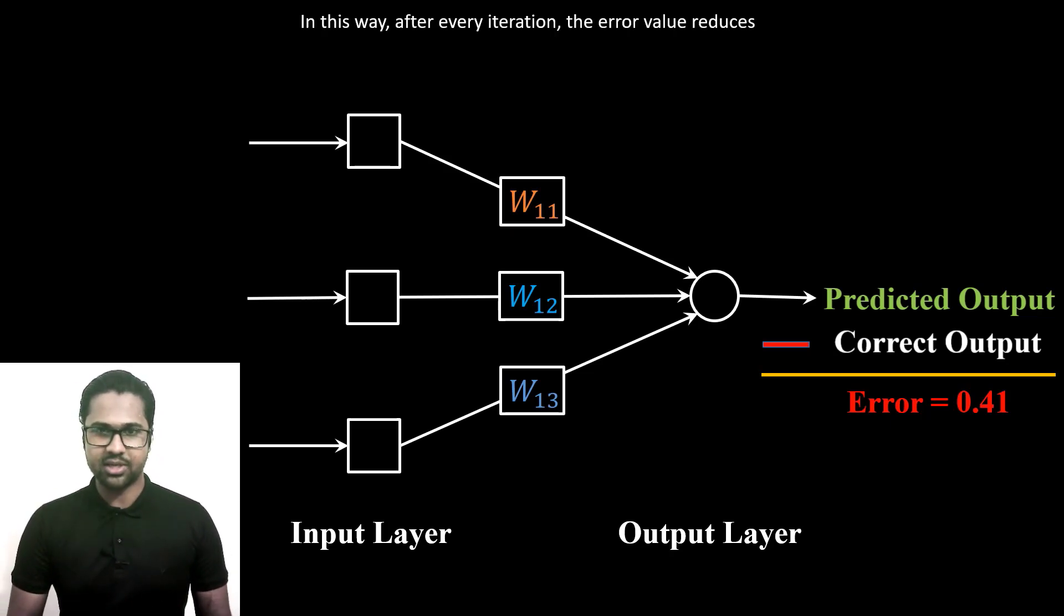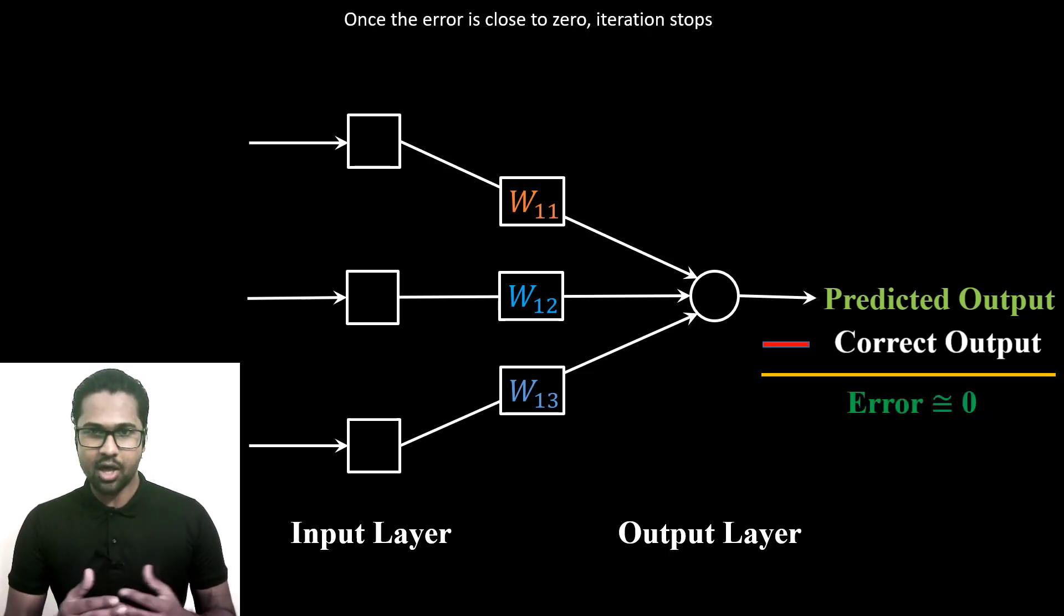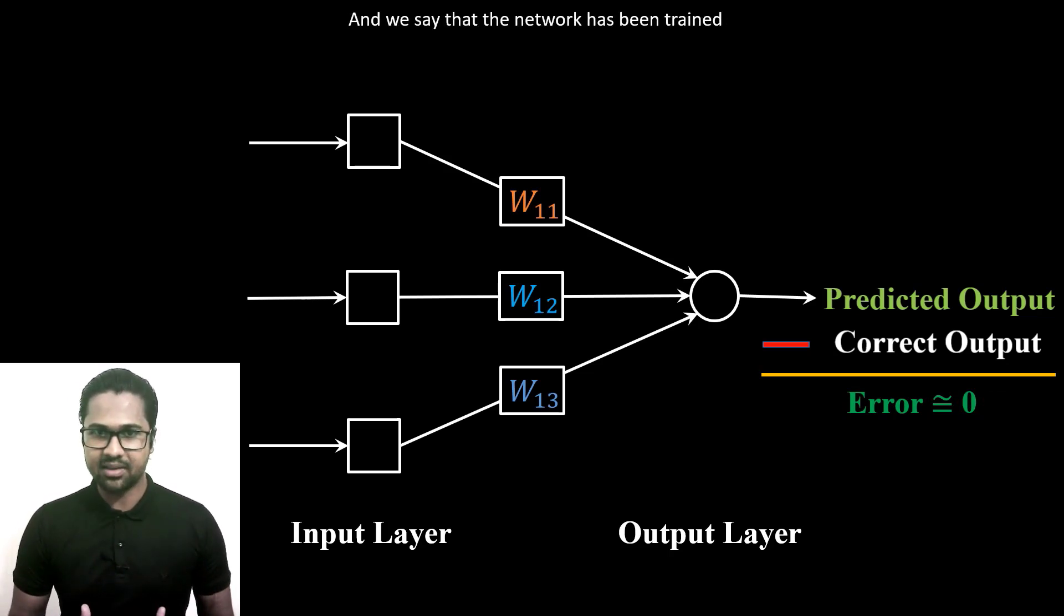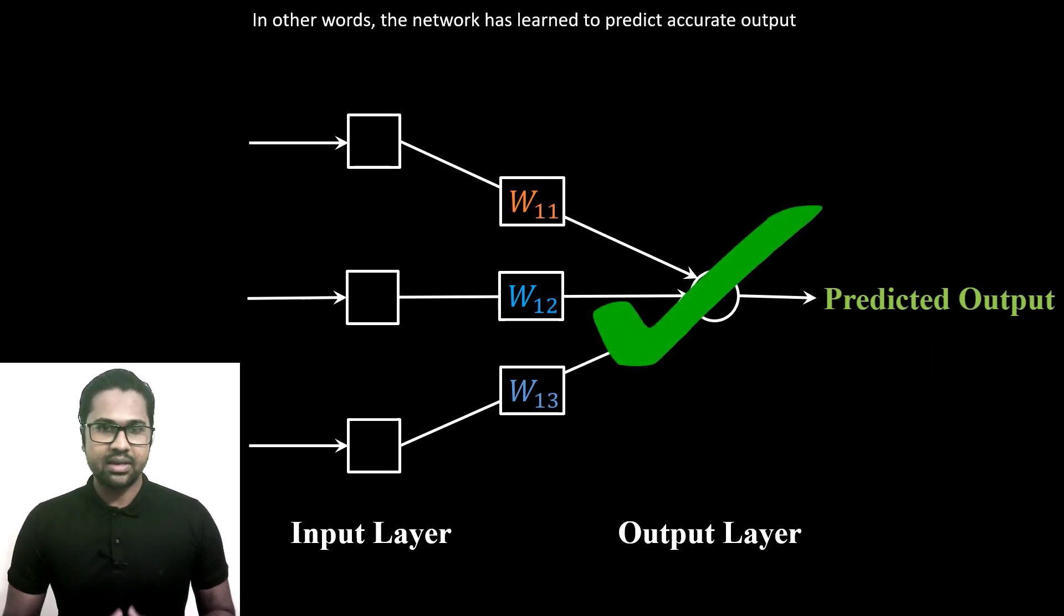In this way, after every iteration, the error value reduces. Once the error is close to zero, iteration stops and we say that the network has been trained. In other words, the network has learned to predict accurate output.